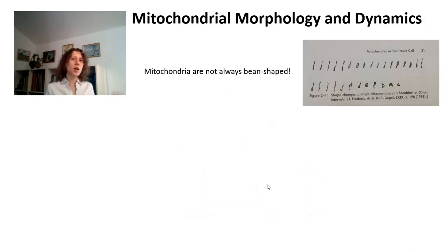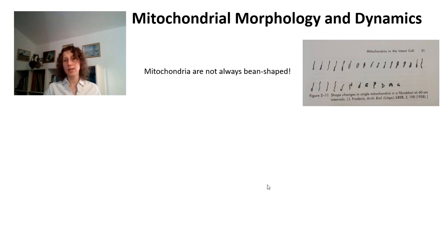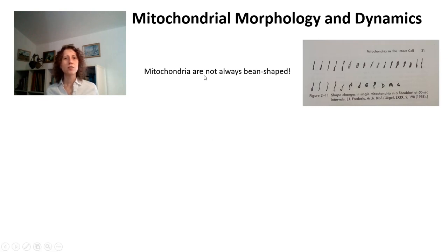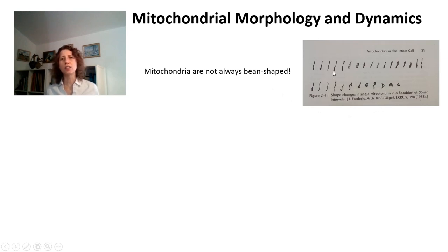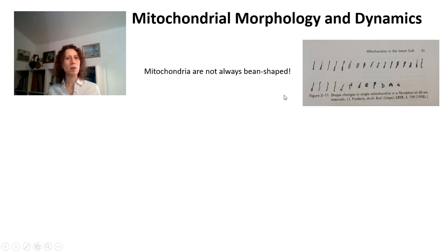Now let's talk about how mitochondrial membranes change over time. Mitochondrial morphology and dynamics has attracted a lot of attention in recent years, but we actually know since the beginning of knowledge about mitochondria that they are not always those bean-shaped organelles that you see in most textbooks. This is a figure from a paper from 1958 describing a single mitochondrion, showing it changing size and shape over time. There are also movies from the 1960s showing mitochondrial dynamics - so this is not new.